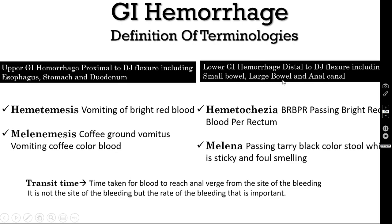What is lower GI hemorrhage? It is the hemorrhage which occurs distal to the DJ flexure, that includes the small bowel, large bowel and anal canal. Here also you should know two terminologies: hematochezia and melena. Hematochezia is bright red blood per rectum, also called bleeding PR. Melena is passing tarry black loose stool which is sticky and foul smelling.